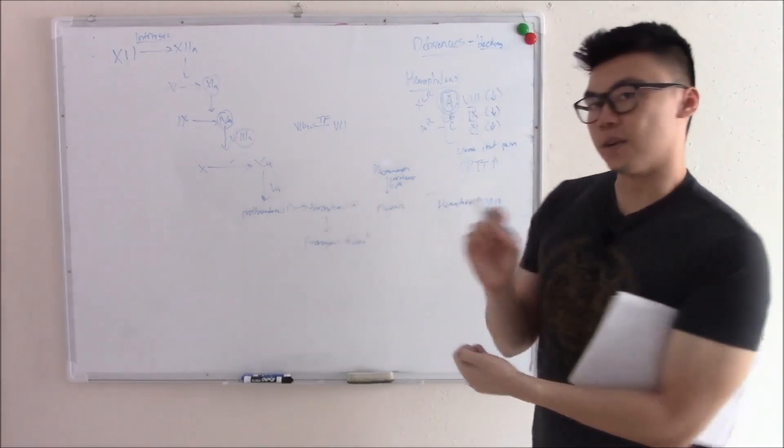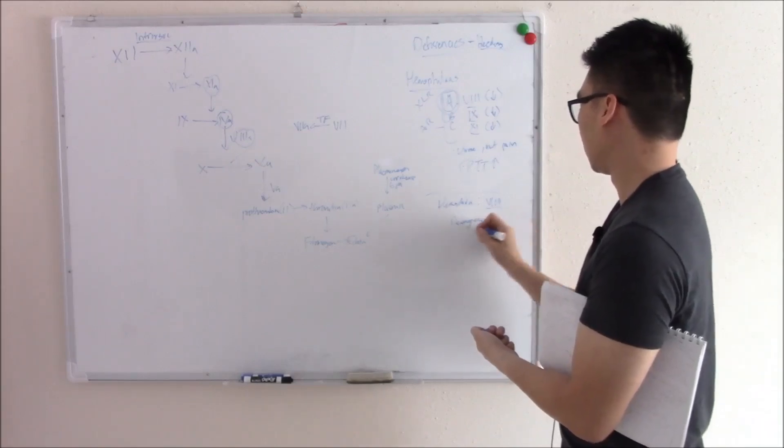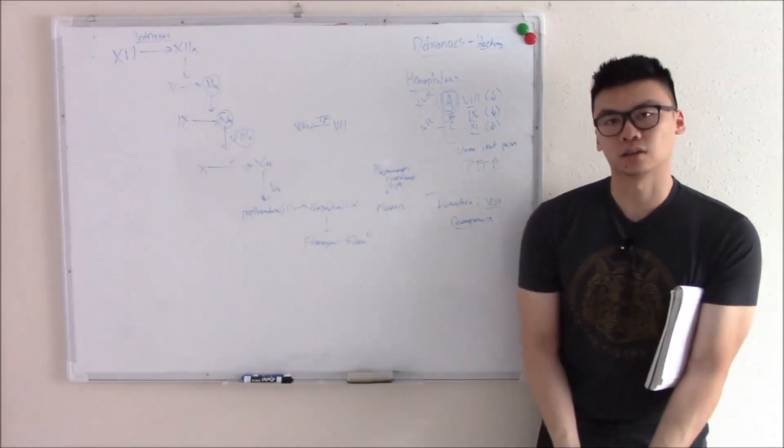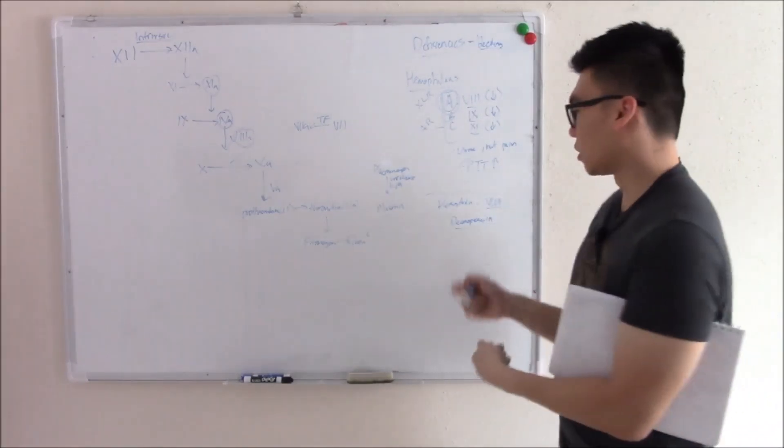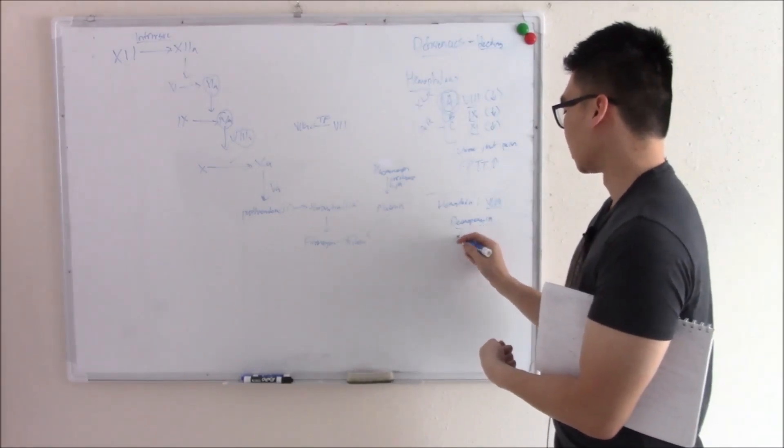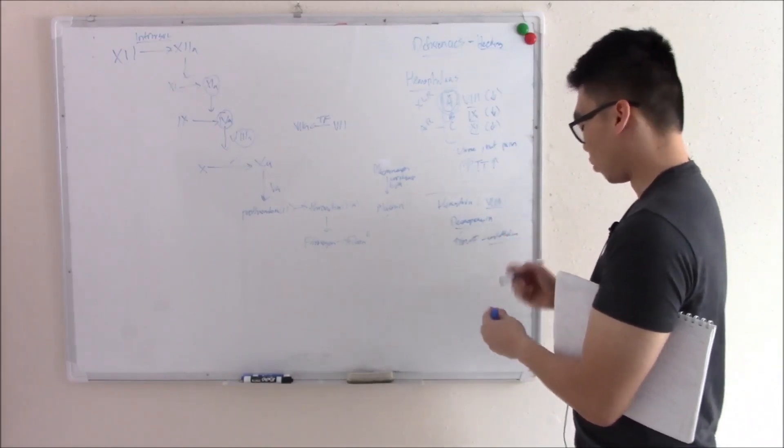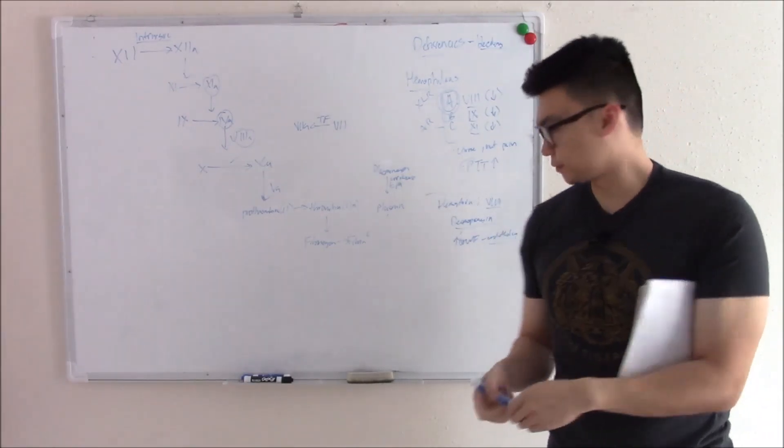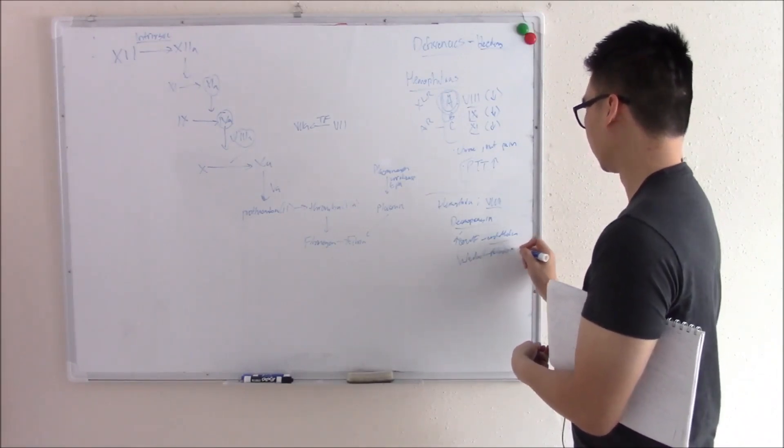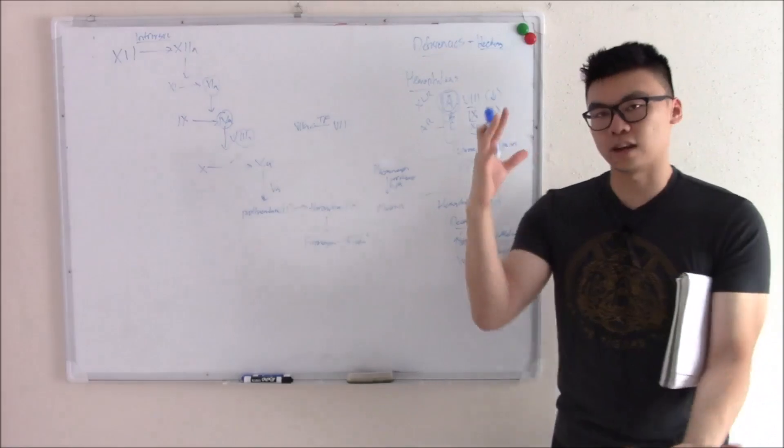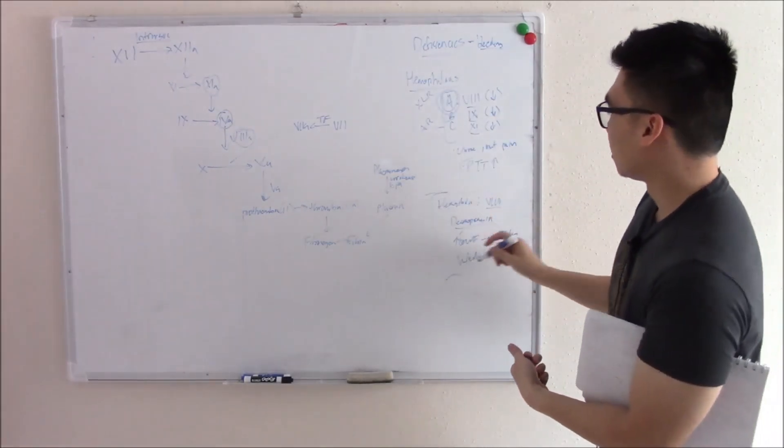A way you can treat hemophilia A is by giving desmopressin. You might be thinking, desmopressin isn't that the ADH analog for things like diabetes insipidus? You're absolutely right. And through some unknown mechanism, it also increases the release of von Willebrand factor from the endothelium. What stores von Willebrand factor in the endothelium? Weibel-Palade bodies. So it releases that von Willebrand factor. It'll bind and stabilize any factor VIII you have, and kind of prolong its life and give you a little bit more factor VIII.